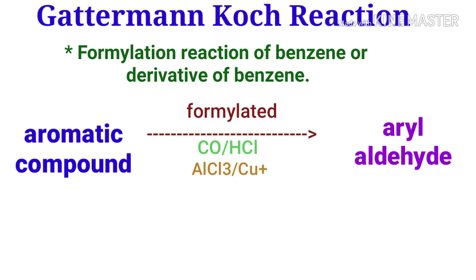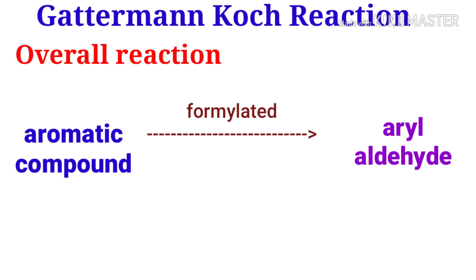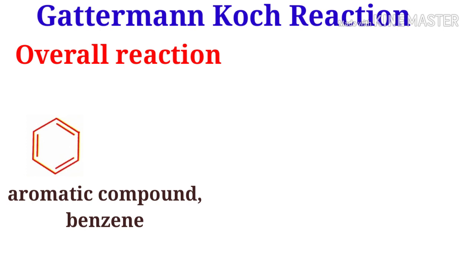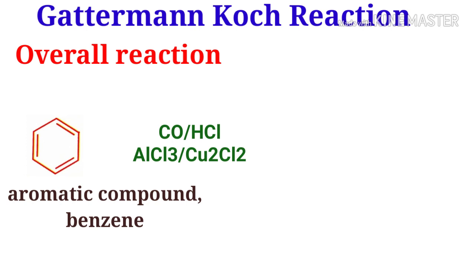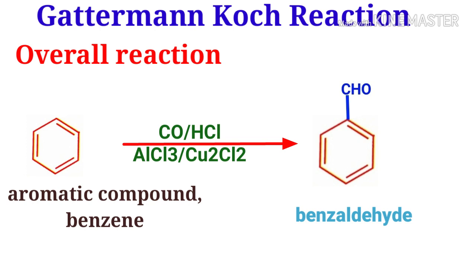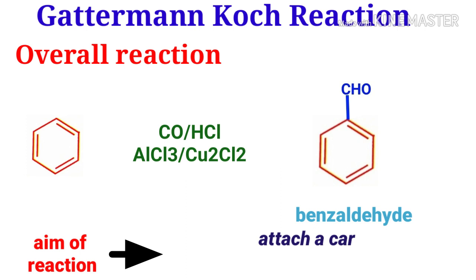The overall reaction is: an aromatic compound — here it is benzene — treated with carbon monoxide and hydrogen chloride, and aluminum trichloride (AlCl3) as a catalyst in the presence of cuprous chloride (Cu2Cl2). The aim of this Gattermann-Koch formylation reaction is to attach a carbonyl group or aldehyde group on an aromatic ring.